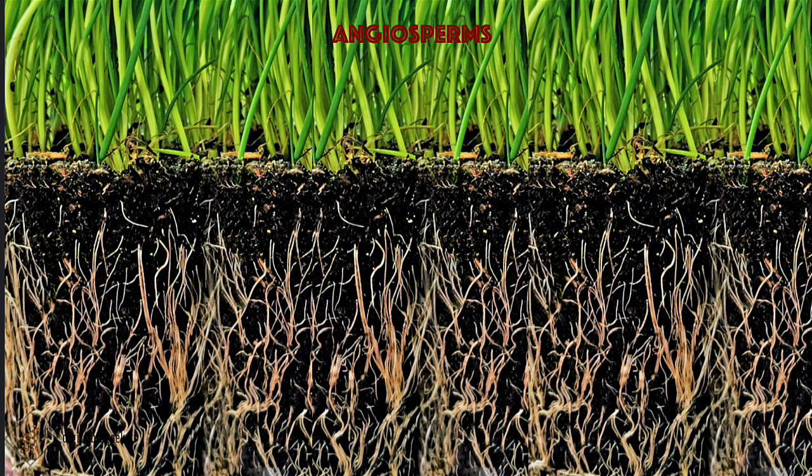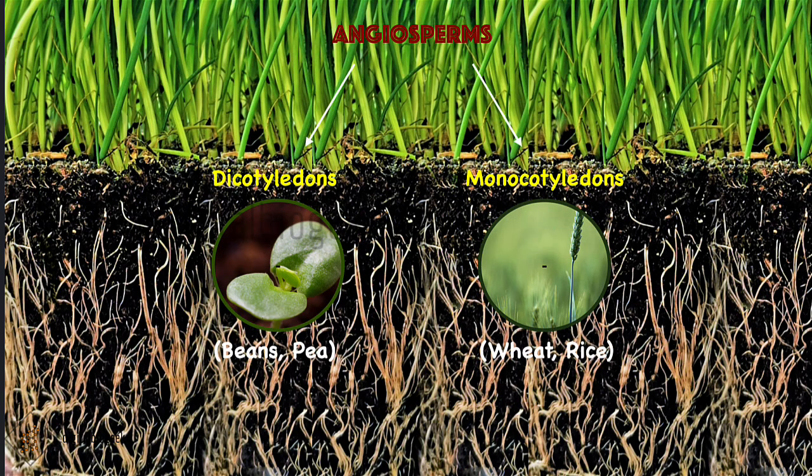Angiosperms, that is the flowering plants, are divided into two classes: dicotyledons and monocotyledons. Dicotyledons have two embryonic leaves, and monocotyledons have only one embryonic leaf, that is the cotyledon.